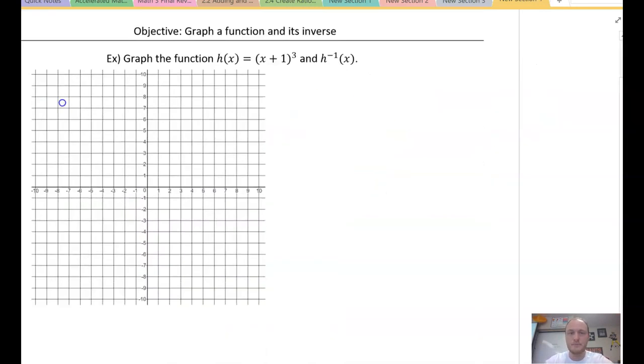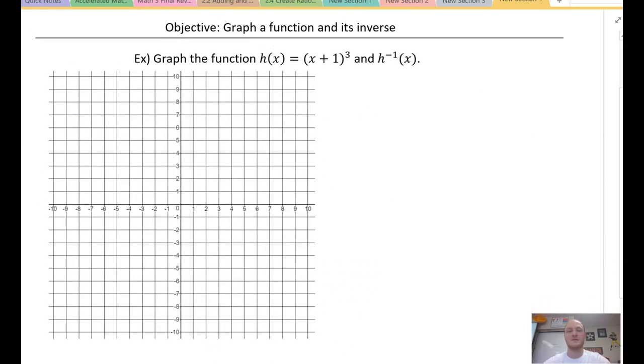Here we go. Graph the function h(x) = (x+1)³ and h inverse of x. So again, step 1, I'll make sure that I have my line y = x. Again, what's the purpose of y = x? Well, this is kind of an imaginary line. It's not an asymptote. I know it's dashed. It's not an asymptote. This is kind of a reference line. What's a reference line? Well, we refer to it. And we're just ensuring our graph's right. If our graph's right, the inverse and the function are going to intersect on that line y = x. So, there's y equals x.